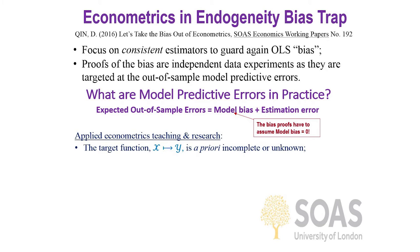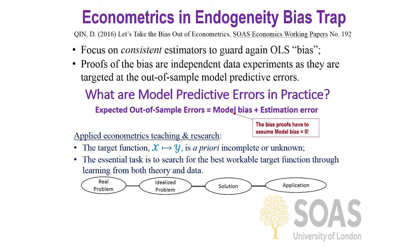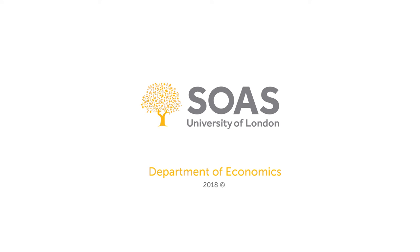That's why we can teach applied econometrics without relying on those heavy mathematics-based consistent estimators from textbooks. I've shifted the essential teaching target in my course toward searching for the best and workable target models through a combination of learning from theory and data. This missing part — learning from data — is readily available from machine learning textbooks. I've tried to combine econometrics with machine learning for my students, to make teaching more motivating and to help them work with real economic data and critically evaluate previous empirical research.